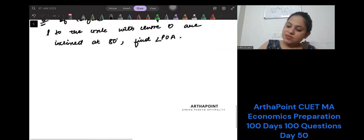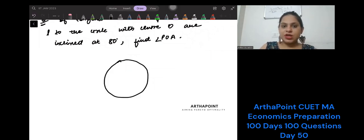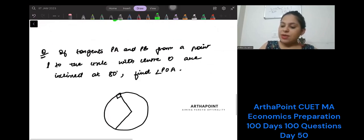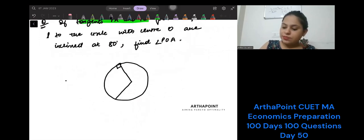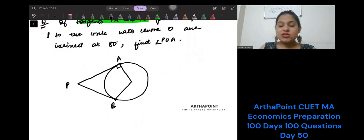I am going to make a diagram. Just have a look here. This is my circle. I have this perpendicular. This is what it says. How do I know this is perpendicular? Because I am going to draw tangent PA and PB. So this is my P point. This is PA. This is PB. So if I have A here and B here and PA and PB are tangents, I know this has to be perpendicular. It says this angle is 80 degrees.